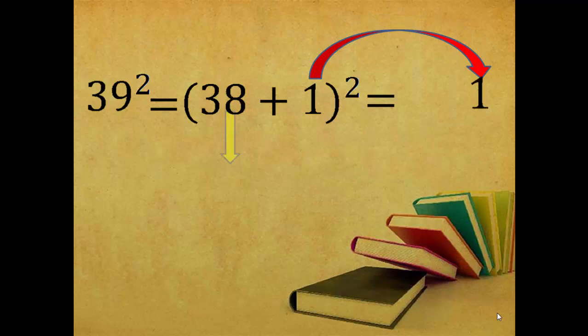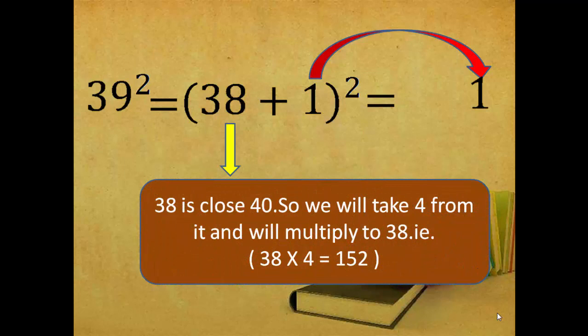Now again, do some simple calculation. That is, 38 is very close to 40. So what we will do now, we will take 4 and we will multiply to 38. That is, 38 into 4 is equal to 152.